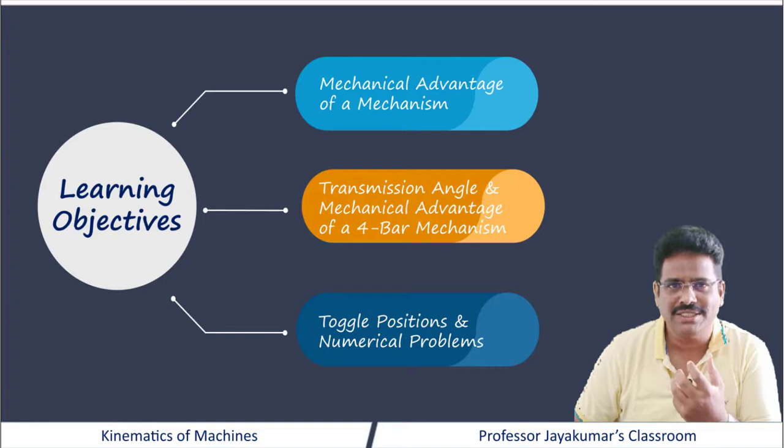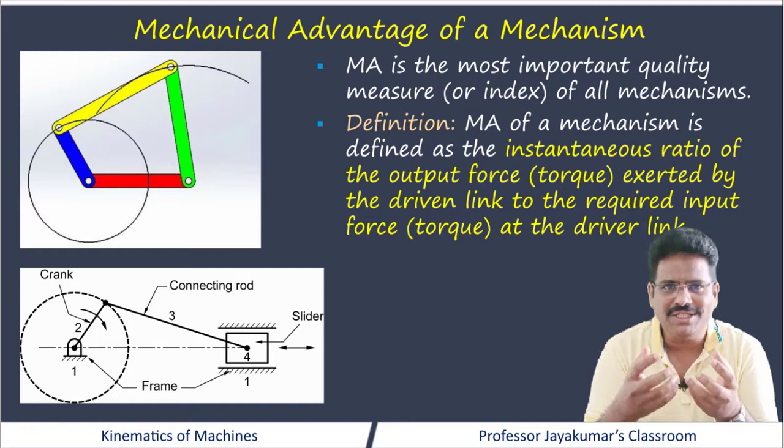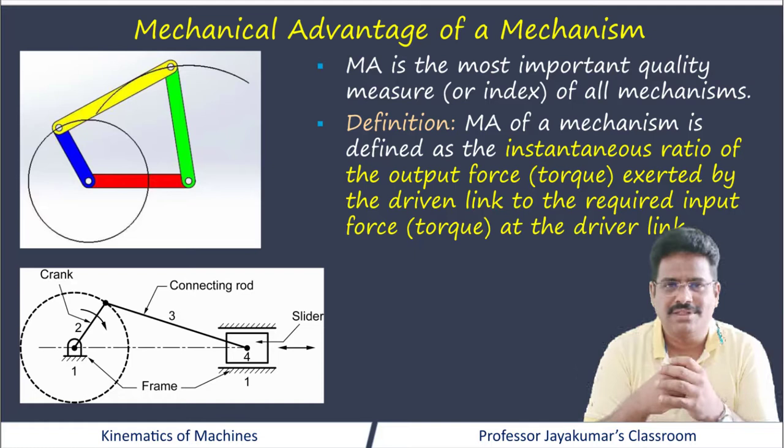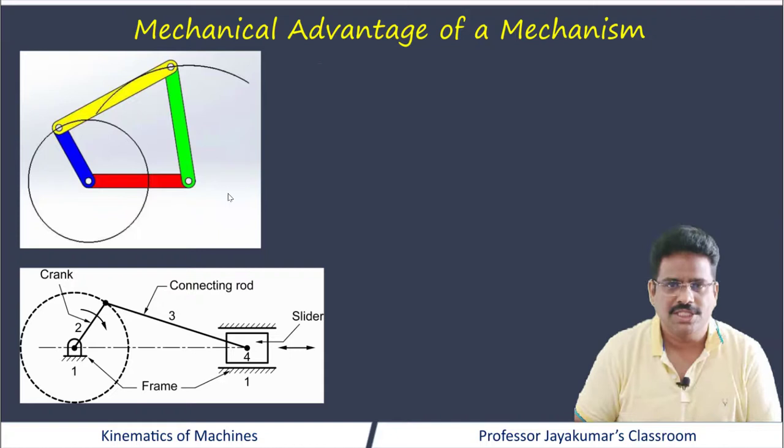What is mechanical advantage? Similar to efficiency of an IC engine or productivity in production or industrial engineering, mechanical advantage is used as a quality measure of all designed mechanisms. It is always a ratio between output and input — the ratio between output torque to input torque. Let us consider this 4-bar mechanism.